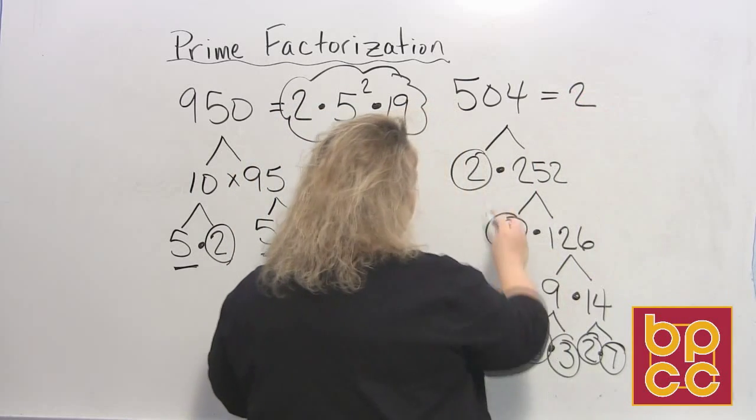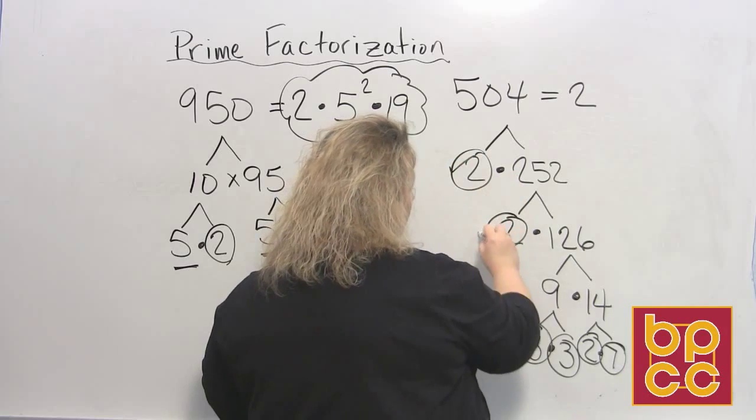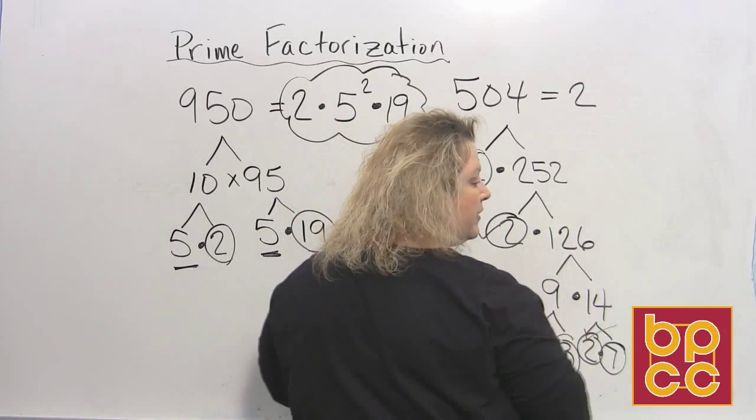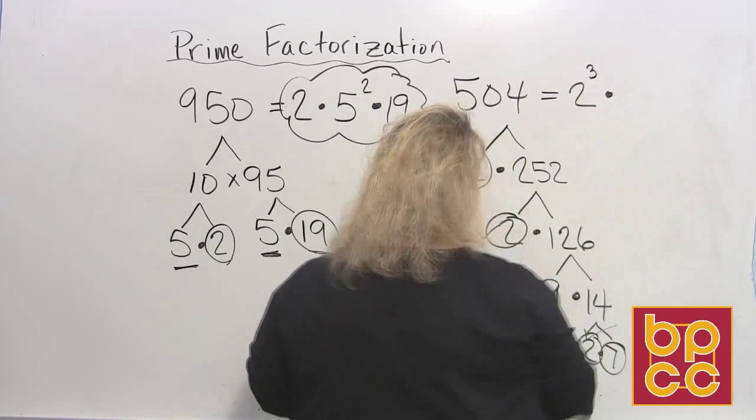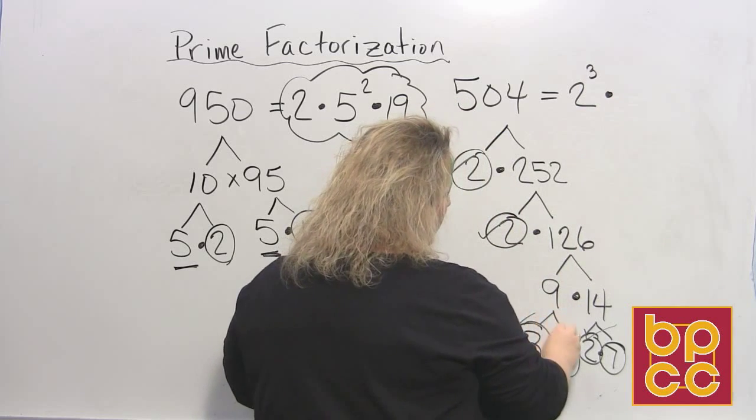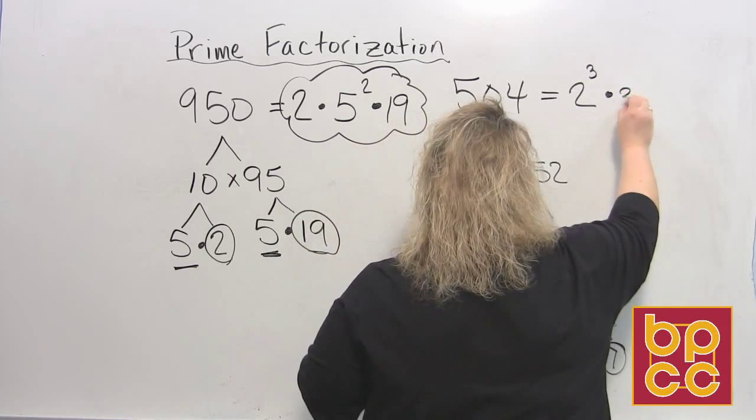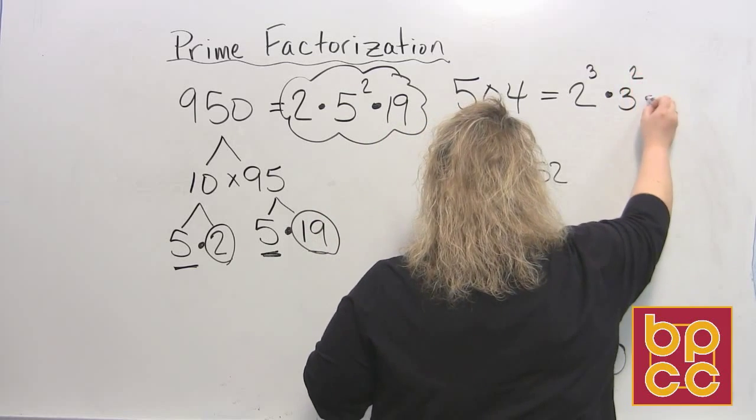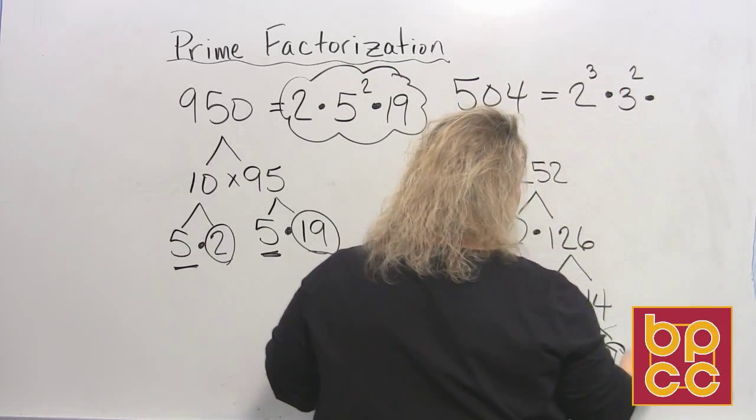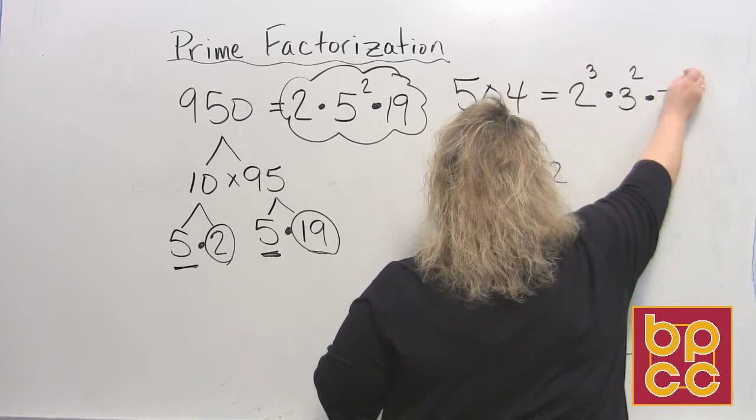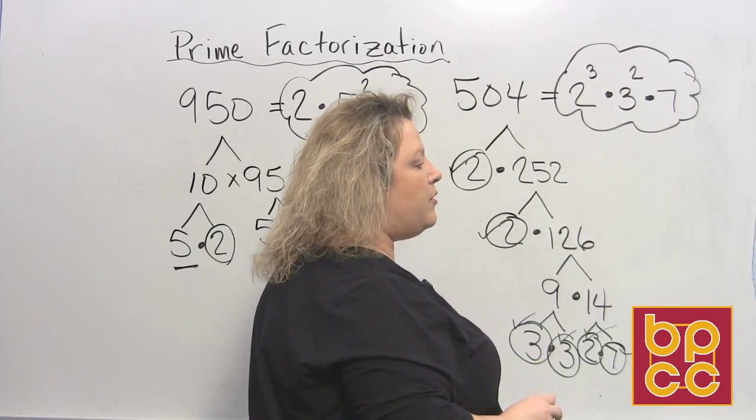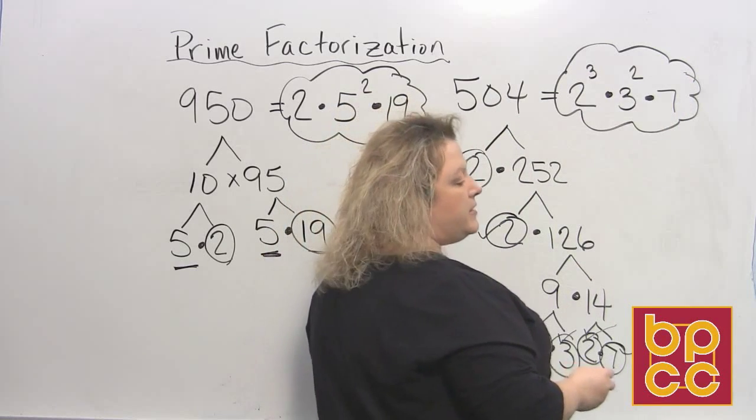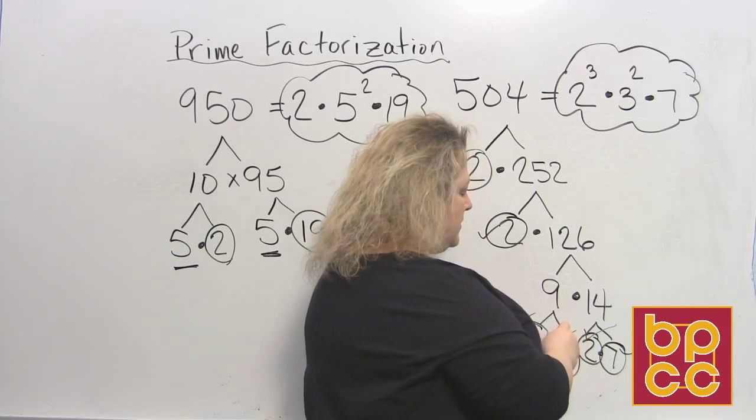I see how many twos. One, two, three. I see three twos. So that would be two to the third power times. I see three threes. That would be three to the second power times seven. There's only one of those. So the prime factorization for 504 would be two to the third power times three to the second power times seven.